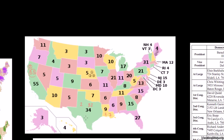It's a winner-take-all system in every state except Nebraska and Maine. In every other state, if you get 51% of the vote in Texas, you get all 34 electoral votes. And if you get even just 50.1% — a slight majority — in California, you get all 55 electoral votes.